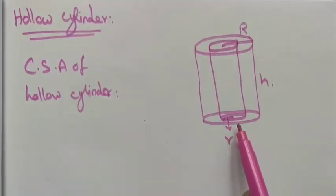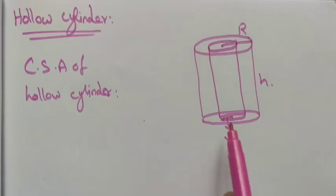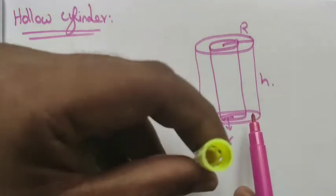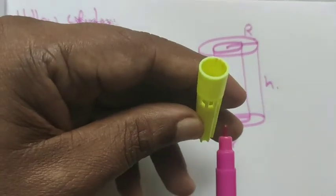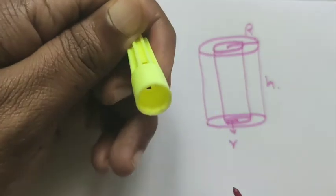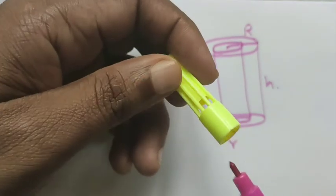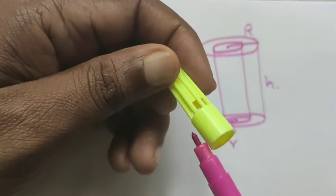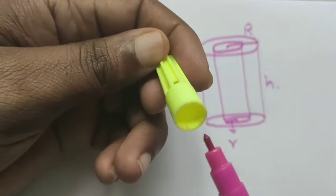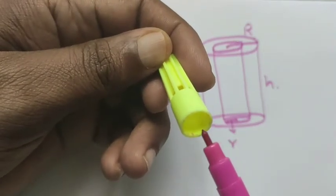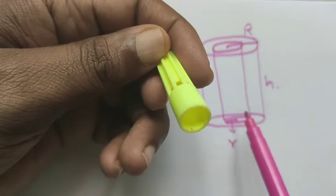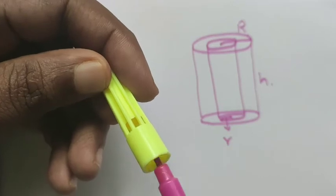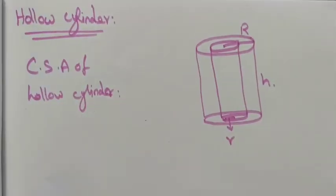When we have a hollow cylinder, we have two radii and two curved surface areas — one is the outer curved surface area and another is the inner curved surface area. Imagine this cylindrical shape is hollow. It has a curved surface area on the outer portion and also on the inside. So the curved surface area of the hollow cylinder means outer curved surface area plus inner curved surface area.